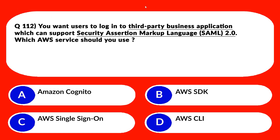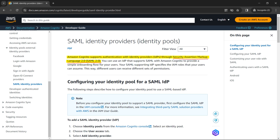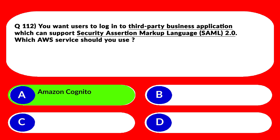This question is about SAML 2.0. We'll look at options B, C, and D together. B is AWS SDK known as software development kit, C is AWS Single Sign-On, and D is AWS CLI, that is command line interface. The key point to note here is that the user wants to log in to a third-party business application and not via AWS services directly. So these three are AWS services where we directly log in — we don't need them, so we can reject these three options. The official documentation states Amazon Cognito supports authentication with identity providers through Security Assertion Markup Language 2.0, also known as SAML 2.0. That's what is required. We'll lock option A as the correct answer.